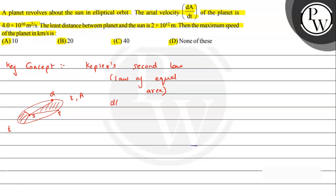From this it can be written that the aerial velocity, that is dA/dt — the area swept in the time interval — is a constant. So if area A₁ here, then area A₂ there, both areas will be equal. This is what Kepler's second law states, and from here we can see that dA/dt is a constant.